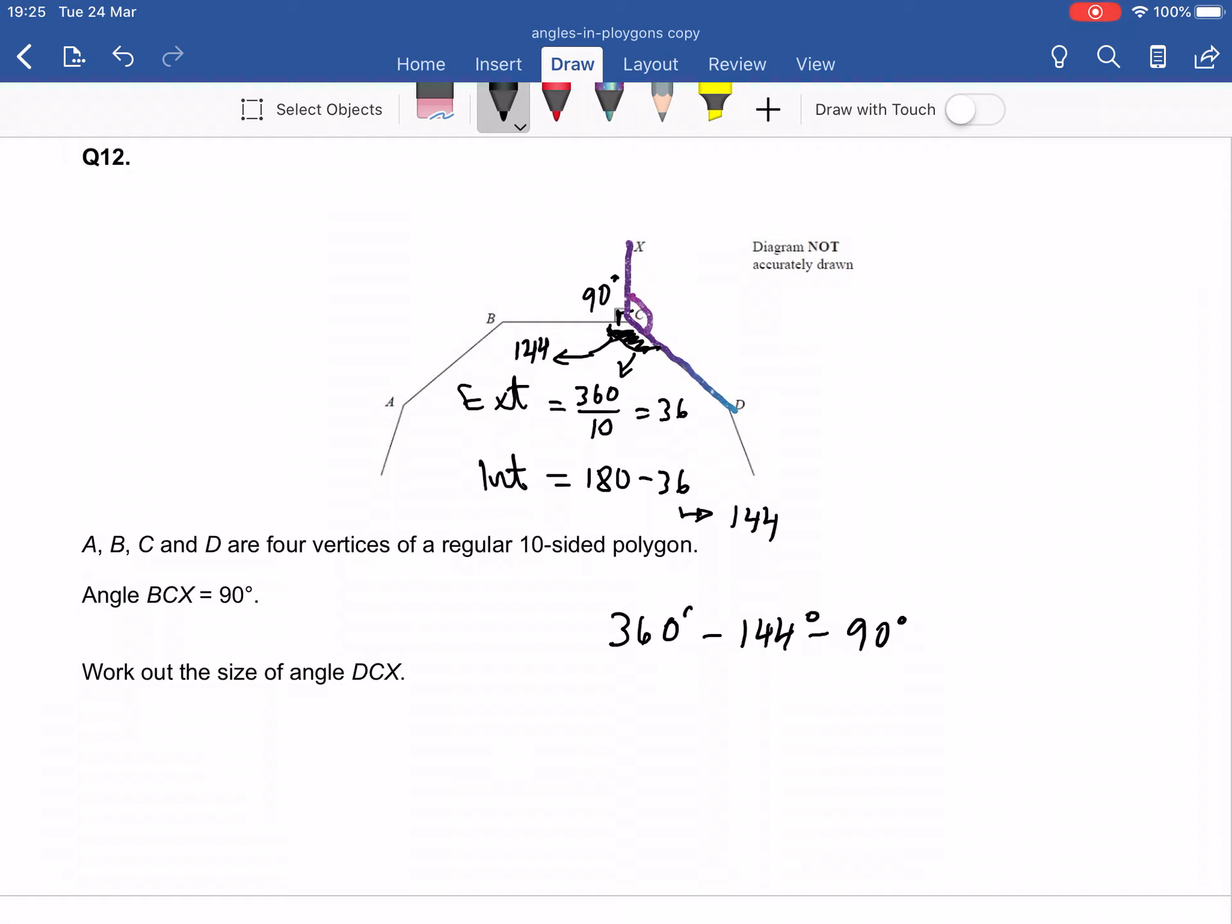So all I have to do now is I have to do 360 take away the 144-degree angle, take away the 90-degree angle, and that's going to give me angle DCX. So on my calculator: 360 minus 144 minus 90, I'm getting 126 degrees. And that is our target angle, so this one here, 126 final answer. All right kids, night night, I'll see you next time. Bye.